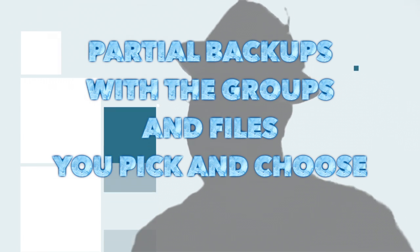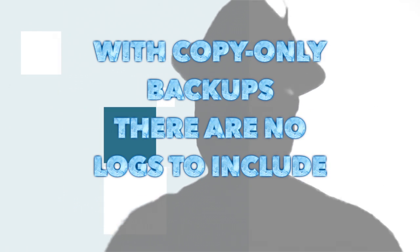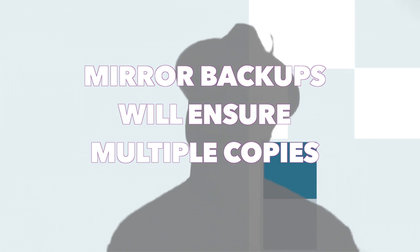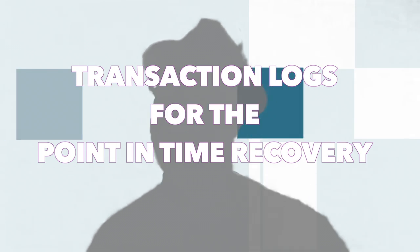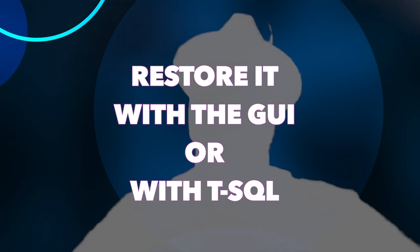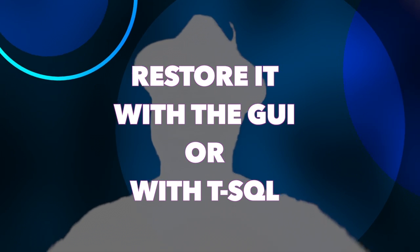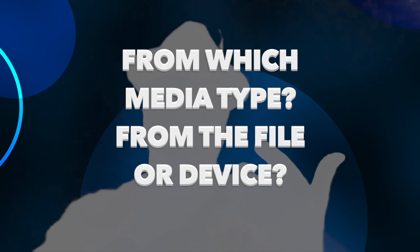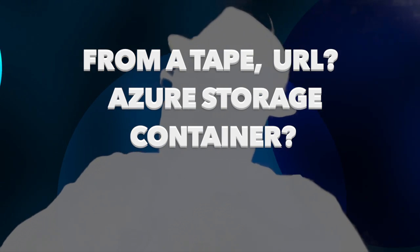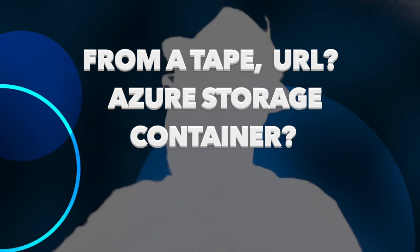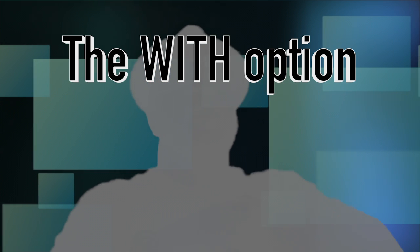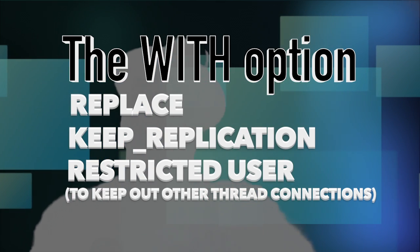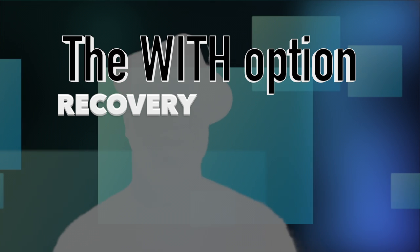With the filegroup files you pick and choose. With copy-only backups there are no logs to include. Mirror backups will issue multiple copies. Transaction logs for the one-time recovery. Restore it with the GUI or with T-SQL. Restore it like a boss by cracking open PowerShell. From which media type? From the file or device? From a tape URL? Azure storage container? So with options: replace, keep, replication — restrict the user to keep our other thread connections.